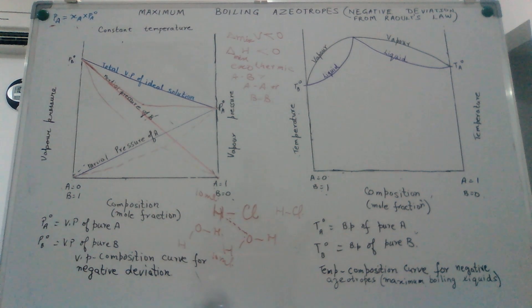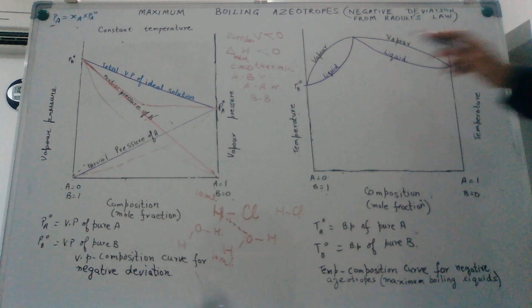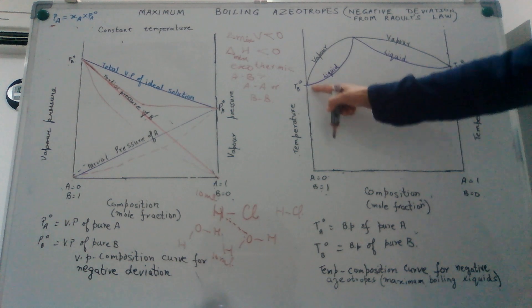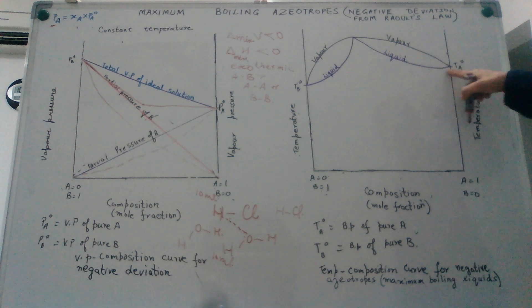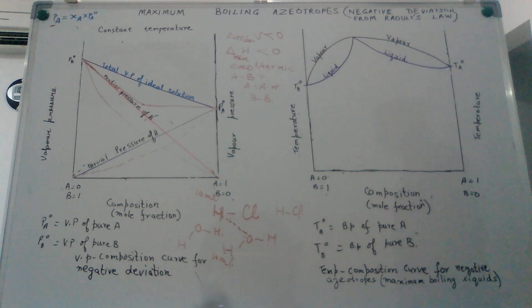So we notice that there is a complete reversal in the temperature composition curve for a solution which is showing negative deviation from Raoult's law. We have the liquid represented by the curve and the composition of the vapor denoted by the purple line.